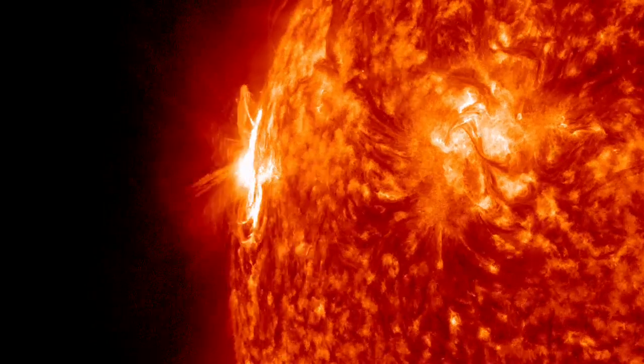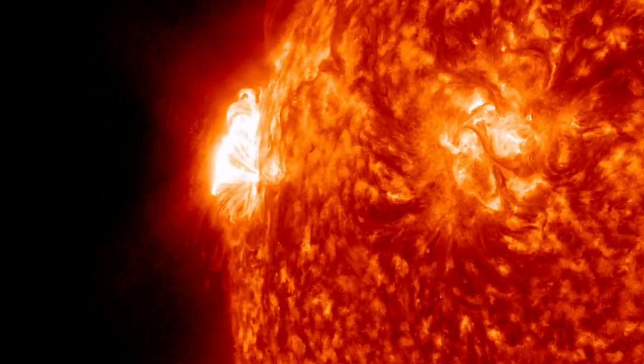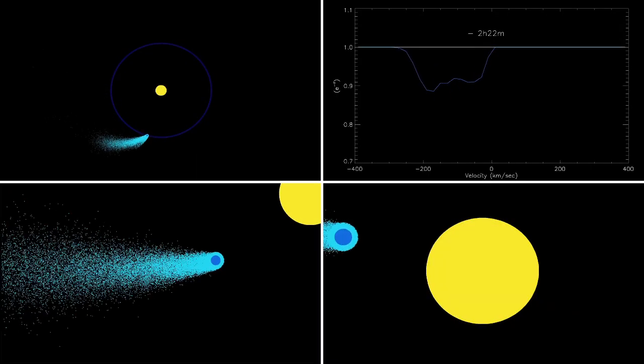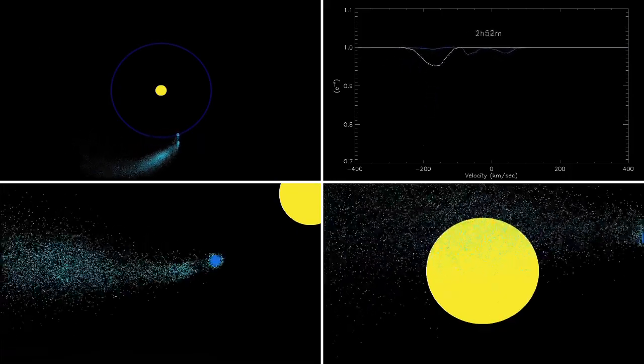Similar flares happen frequently on the Sun. But because the planet is so big and so close to its star, this X-ray blast had an outsized effect, heating the planet's atmosphere and sweeping away 1,000 tons of gas each second.